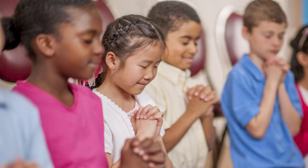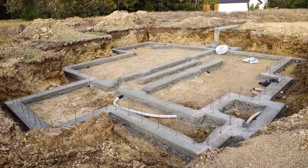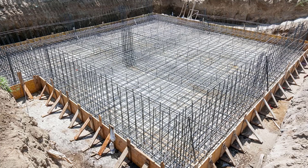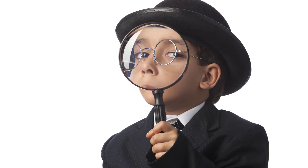Now let's review. In the last video we saw that the 70 weeks begins with Artaxerxes, and we also saw that the start of the 70 weeks begins in the 7th month. We saw that these little details are building a foundation that is strong, and that each little detail is like a rebar to reinforce that strength. Do you remember discussing how to determine if you are correctly applying Bible prophecy?